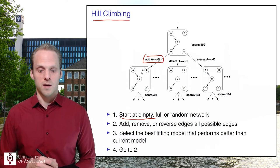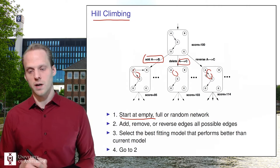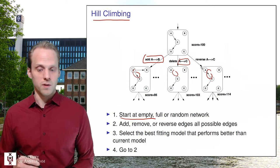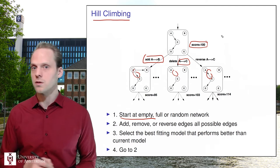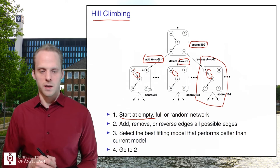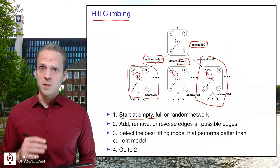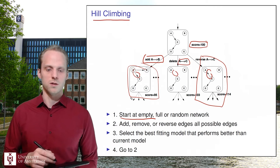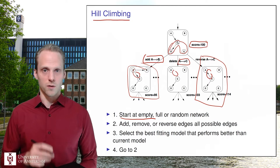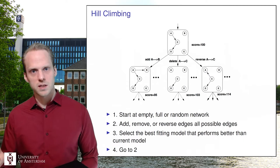This approach is used in psychological networks, for example in a paper by Richard McNally and colleagues, who use the hill climbing algorithm. You start with an empty, full, or random network as a starting point, then keep adding, removing, or reversing edges — for instance, try adding edge A→B, try deleting A→C, try reversing A→C to C→A — and evaluate which change gives the best score (BIC, AIC, etc.). You keep doing this iteratively until you reach a best-fitting model. It's very powerful, but it results in a local optimum, and there's not much built-in control for overfitting, which is why bootstrapping is very important.